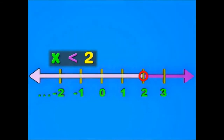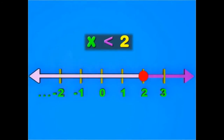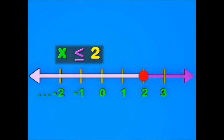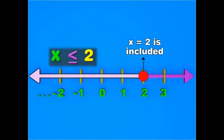Now, if you fill this circle on the number line, the inequality changes to x is less than or equal to 2. The filled circle shows that 2 has been included in the shaded part of the number line.